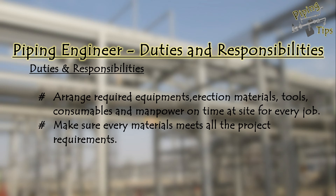The next step is arranging not only the materials but also equipment, tools, consumables, and manpower. We have prepared the sequence of activities, so for each activity we can calculate the requirements. We have to arrange all these materials and equipment. When making this material arrangement, we have to consider the project requirements — the project may insist on specific requirements like certain material specifications for certain lines. So we have to consider all project requirements while planning the material arrangement.